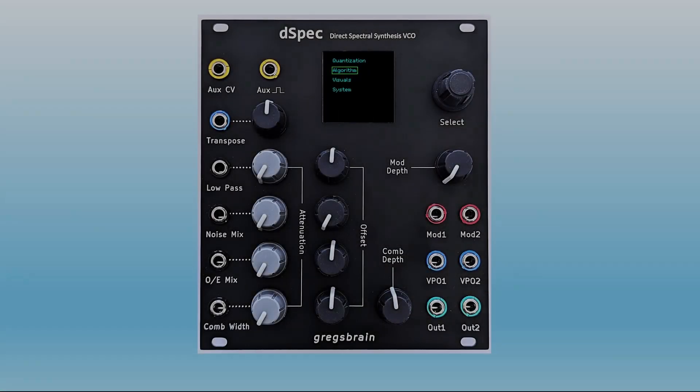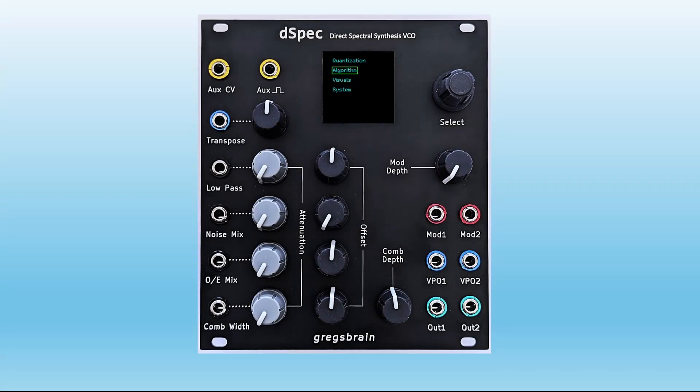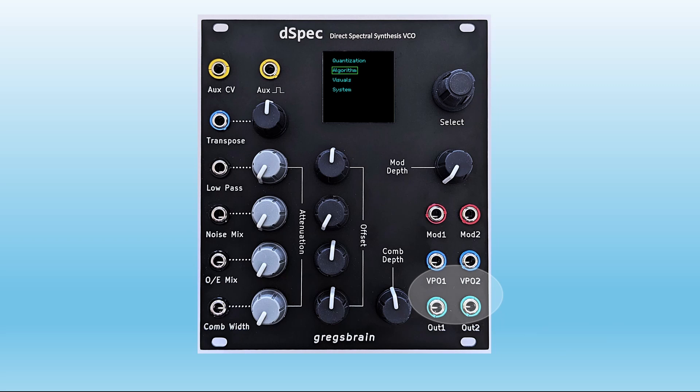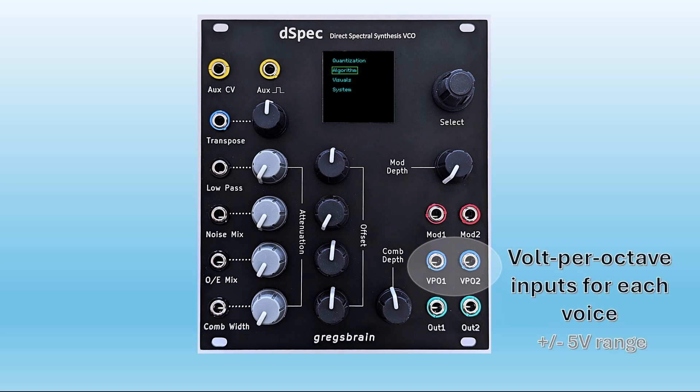This is a quick overview of the D-Spec front panel. D-Spec is a two-voice oscillator, so it has dual audio outputs and a volt per octave input for each of those two voices.